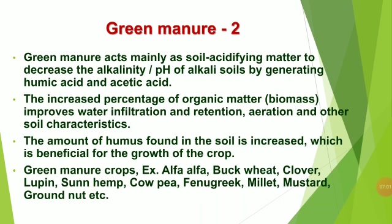The increased percentage of organic matter improves water infiltration and retention, aeration, and other soil characteristics. The amount of humus found in the soil is increased, which is beneficial for crop growth. Examples of green manure crops are alfalfa, buckwheat, clover, lupine, sunn hemp, cowpea, fenugreek, millet, mustard, and groundnut.